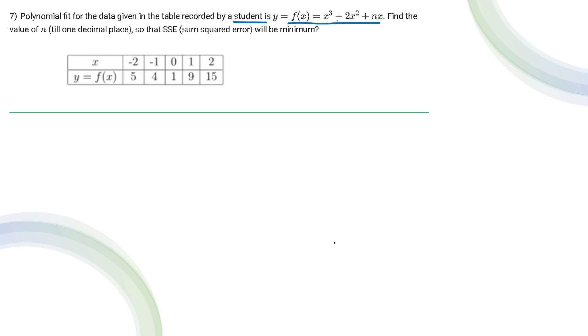So let's first understand the question. I have been given a polynomial f(x) = x³ + x² + 3x² + nx, for which a student has done some calculations. According to the student: for x = -2, f(x) = 5; for x = -1, f(x) = 4; for x = 0, f(x) = 1; for x = 1, f(x) = 9; and for x = 2, f(x) = 15.